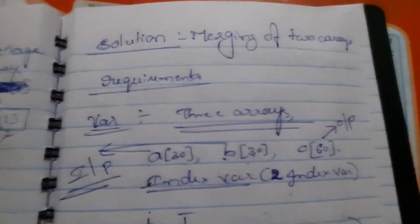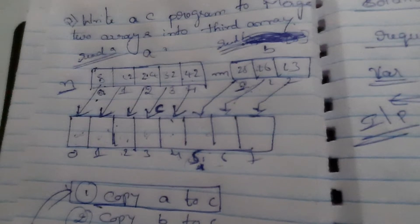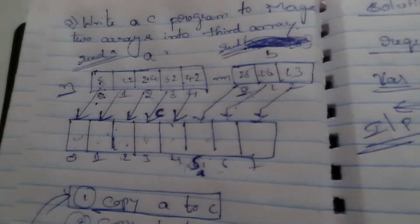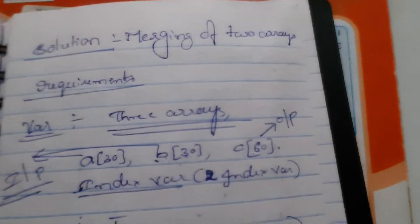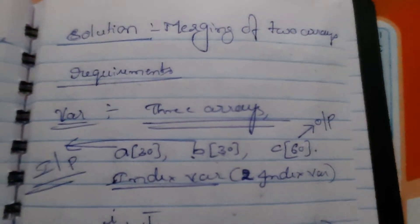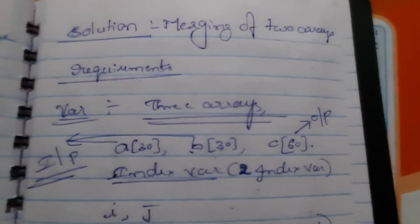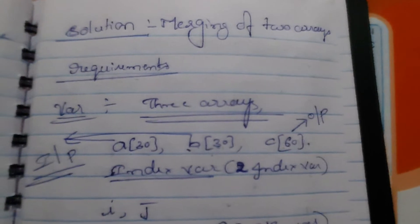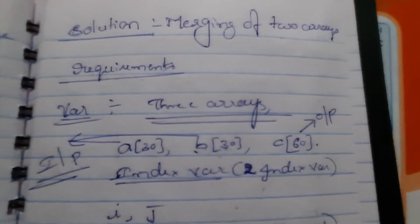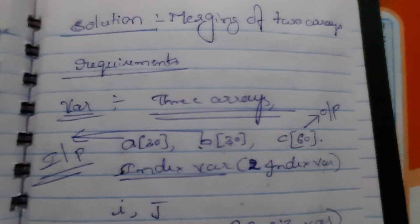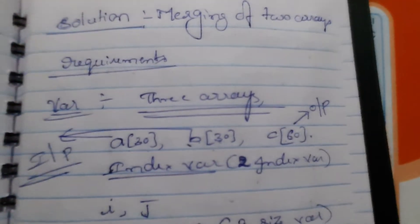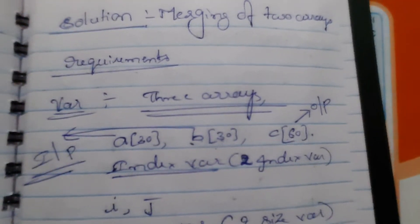Taking from the previous example, how many arrays do we require here? One array A, one array B, and one array C. That is the reason in the requirements we need 3 array variables: A of 30, B of 30, C of 60. Why C of 60? Because C array must be bigger than A and B — merging means we are copying these two arrays into C, so it should be bigger.